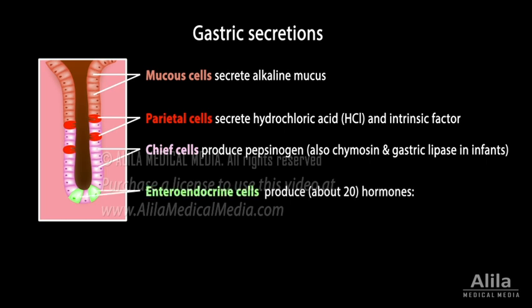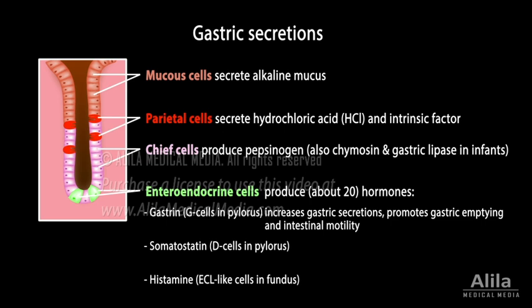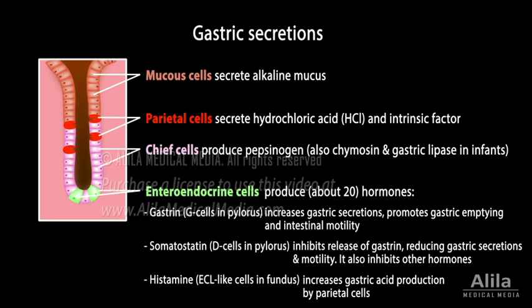Finally, there are enteroendocrine cells secreting various hormones into the bloodstream. Notable hormones include gastrin produced by G cells and somatostatin by D cells in the pylorus region, and histamine by ECL-like cells in the fundus. Gastrin increases secretions by gastric glands, promotes gastric emptying, and stimulates intestinal motility. Histamine increases gastric acid production by parietal cells. Somatostatin inhibits the release of gastrin, reducing gastric secretions and motility, and also inhibits a large number of other hormones.